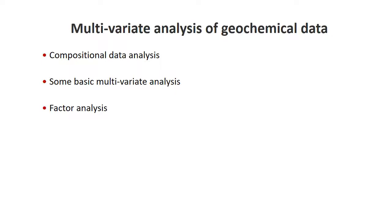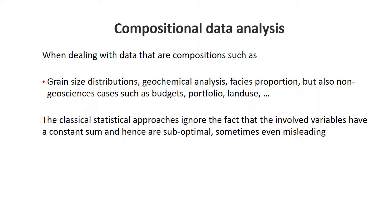In compositional data analysis we deal with data that are compositions, and there are many examples—it doesn't have to be just a geochemical analysis. For example, grain size distributions are distributions, so they are integral; the integral is essentially one, so that's another constant sum example. Compositional data analysis is not just present in the geosciences but has many applications outside. We have to be careful applying classical statistical approaches that ignore the constant sum constraint, as we'll see examples where doing so gives misleading or erroneous results.